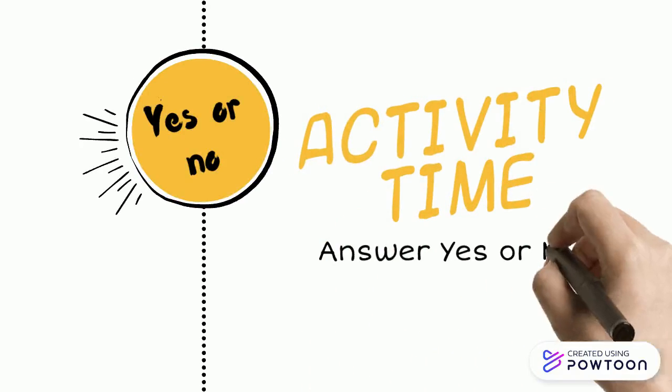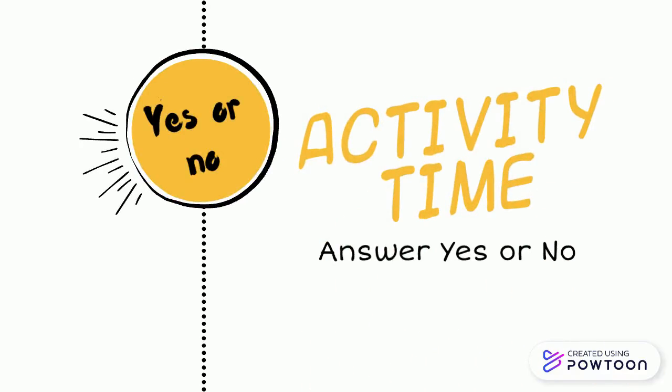Keep various objects in front of your child. For example, keep an apple and ask your child, is this an orange? The child will say no. Then ask him, is this an apple? The child will say yes.